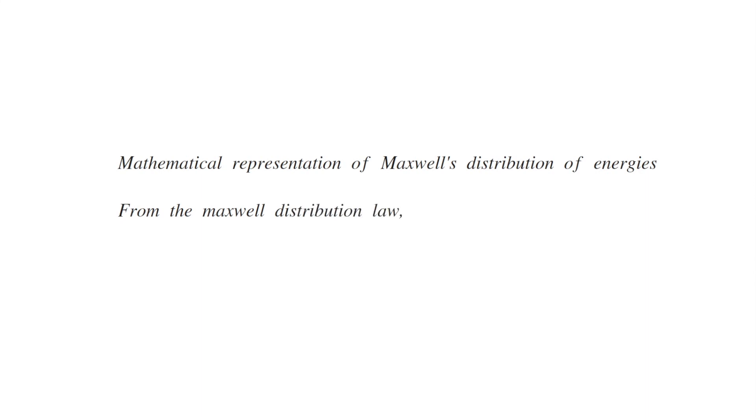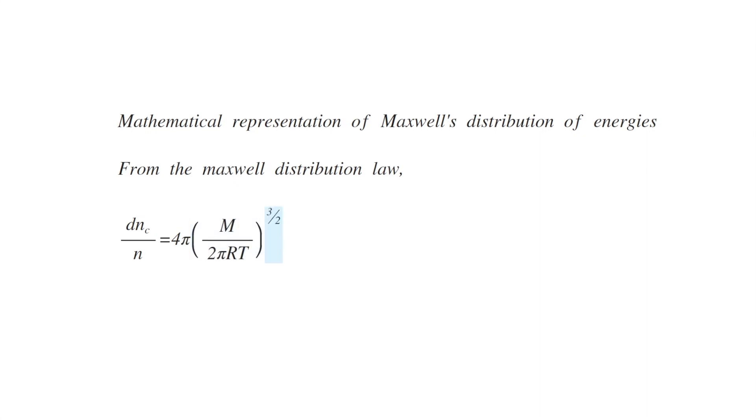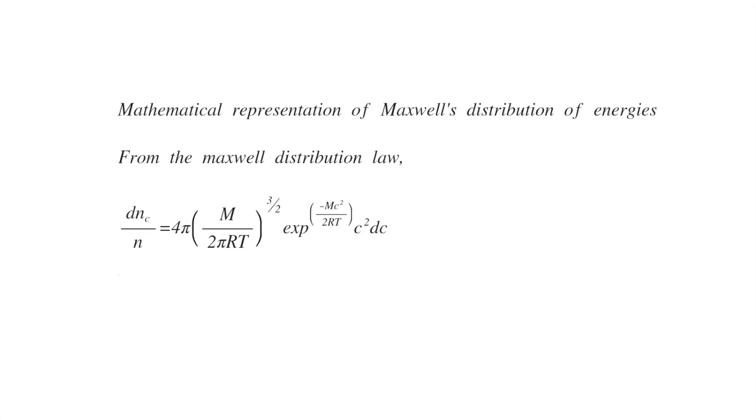From the Maxwell distribution law, dNc by n equals 4 pi m by 2 pi RT to the power 3 by 2, exponential minus mc squared by 2RT, c squared dc, where c is the velocity, m is the molecular weight, R is the gas constant, and T is the temperature.